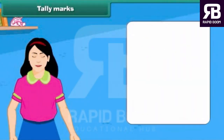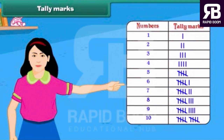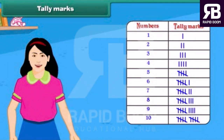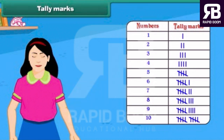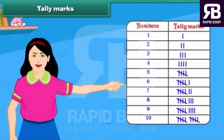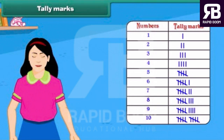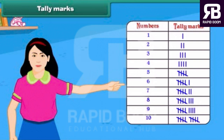Tally marks are one of the easiest and quickest methods used for data handling. A tally mark counts objects or activity in groups of 5. A single vertical line represents a single object. For representing two objects, two vertical lines are drawn. Each mark represents an object. While representing five objects, four vertical lines are drawn and a fifth diagonal line cuts across the four vertical lines.